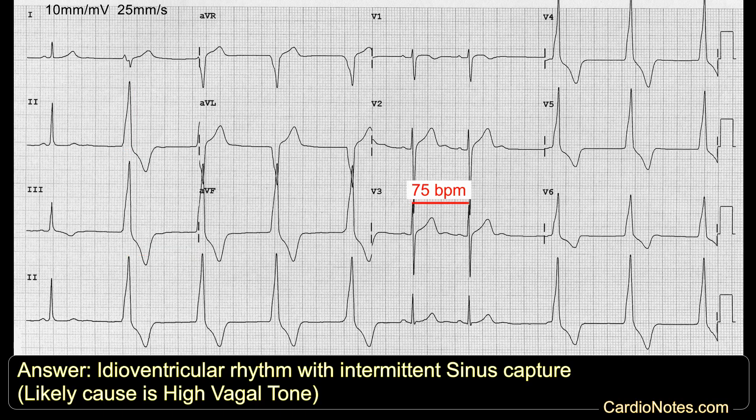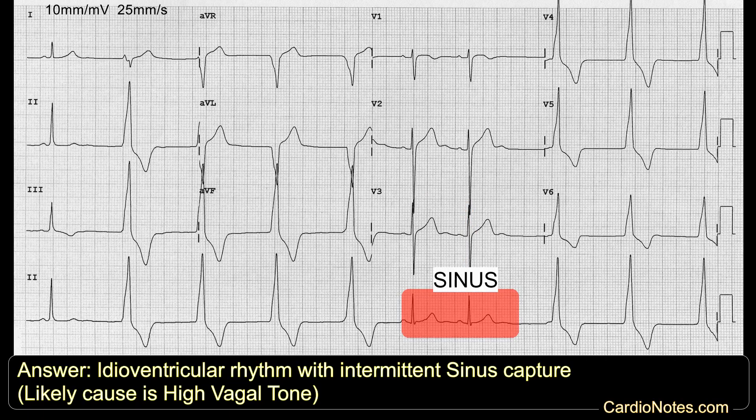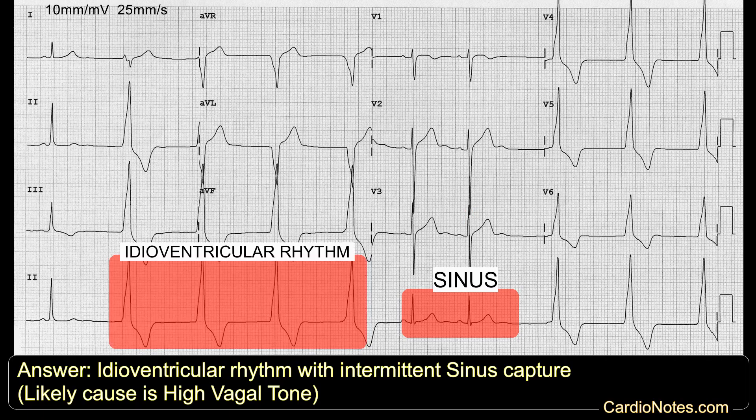When the heart rate increases to 75 beats per minute, QRS complexes become narrow again. So it's sinus arrhythmia with competing sinus and idioventricular pacemakers. Note that sinus capture occurs when the sinus rate exceeds the idioventricular rate. He is a healthy 32-year-old professional football player with likely very high resting vagal tone causing intermittent idioventricular rhythm.